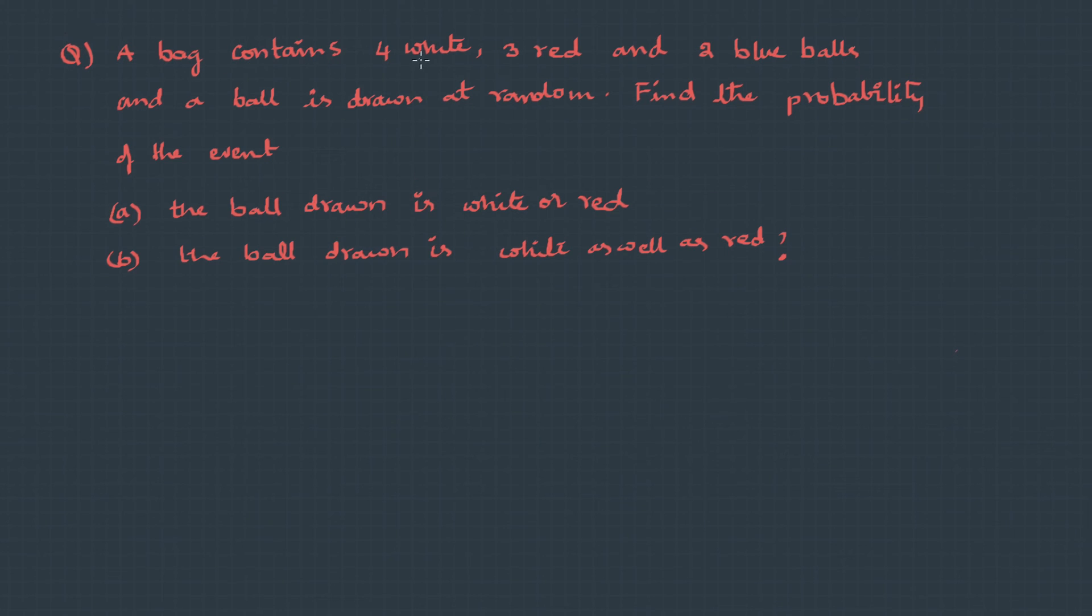Here we have another question. A bag contains 4 white, 3 red, and 2 blue balls, and a ball is drawn at random. Find the probability of the event A: The ball drawn is white or red. B: The ball drawn is white as well as red. To solve this, first let's define the sample space. So here we have 4 white balls, 3 red balls, and 2 blue balls, so the sample space has 9 balls.